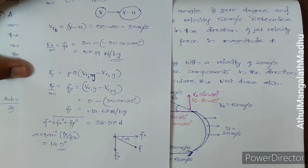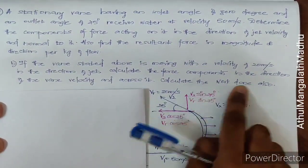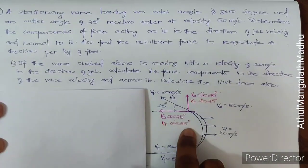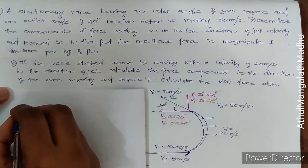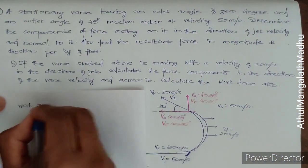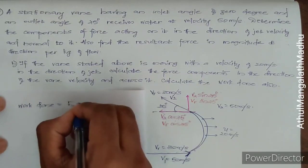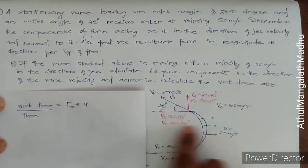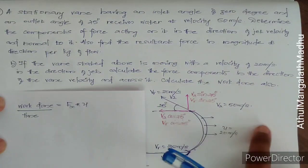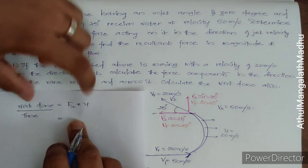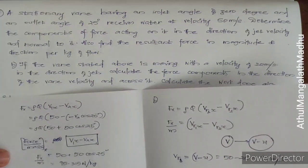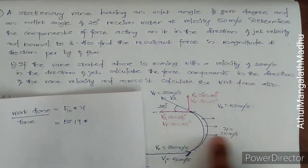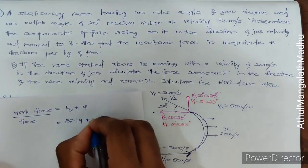Now the major thing to calculate is the work done. The vane is moving in the u direction, which is the x-direction. So the work done per unit time equals the force in x-direction multiplied by the velocity u. Work done = fx × u = 57.19 × 20 = 1143.8 Watts per kilogram.